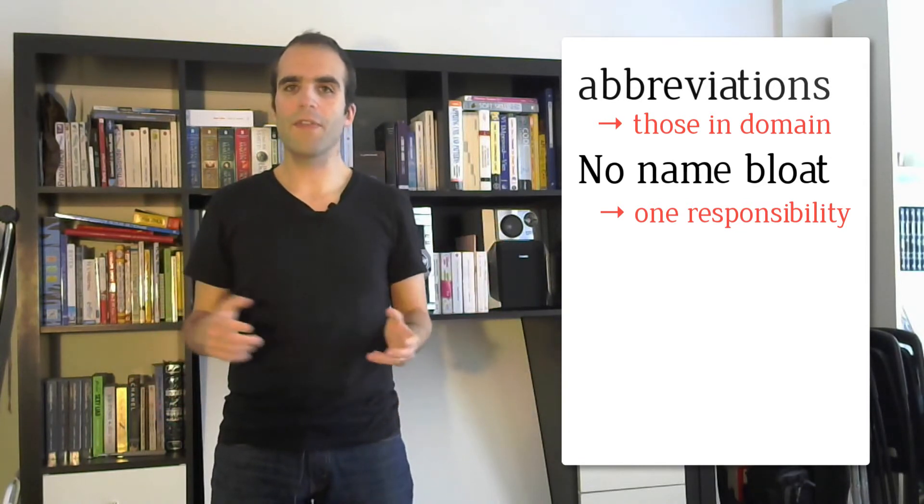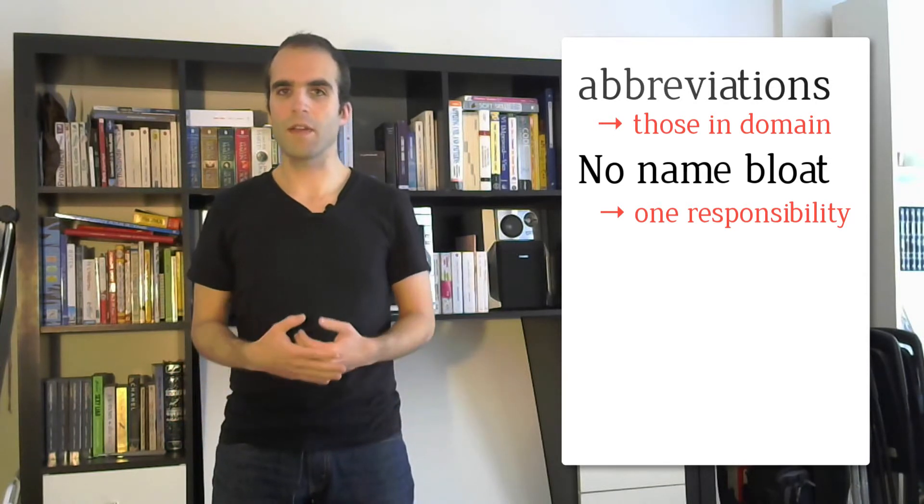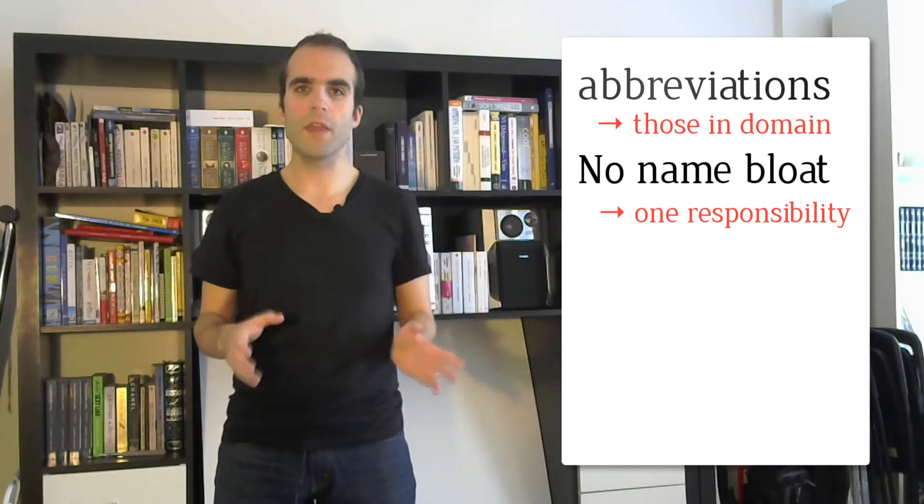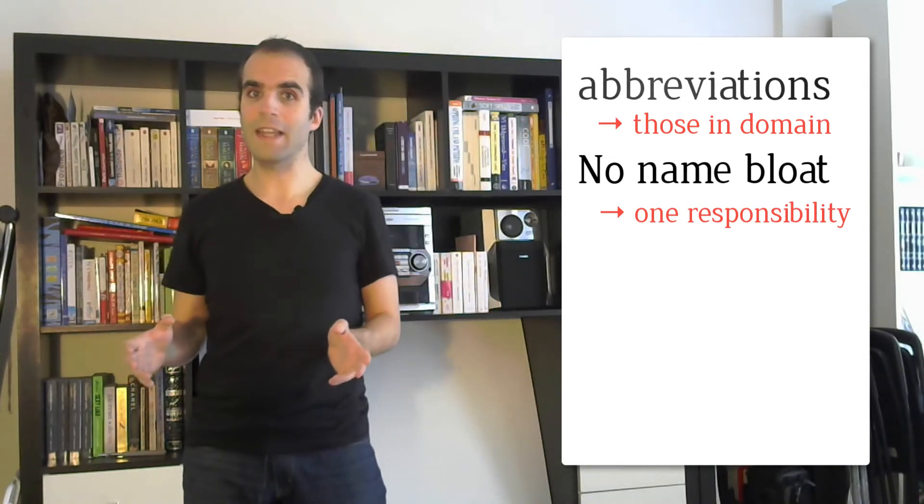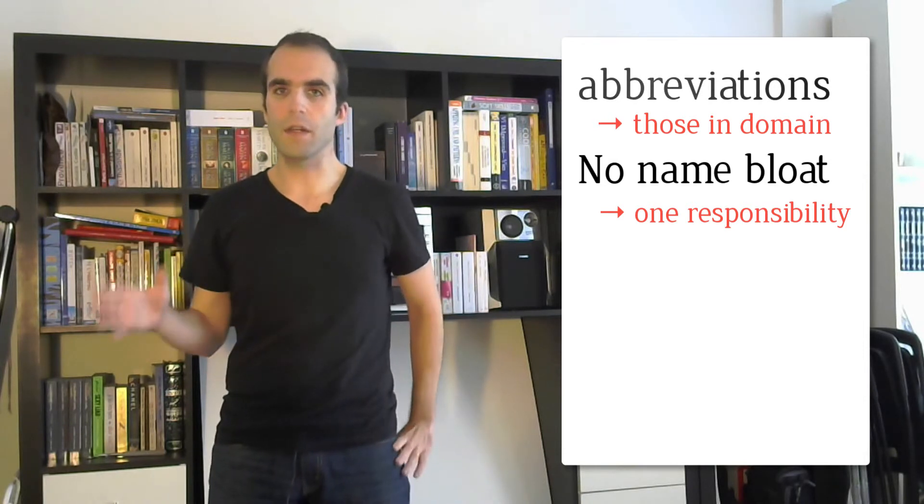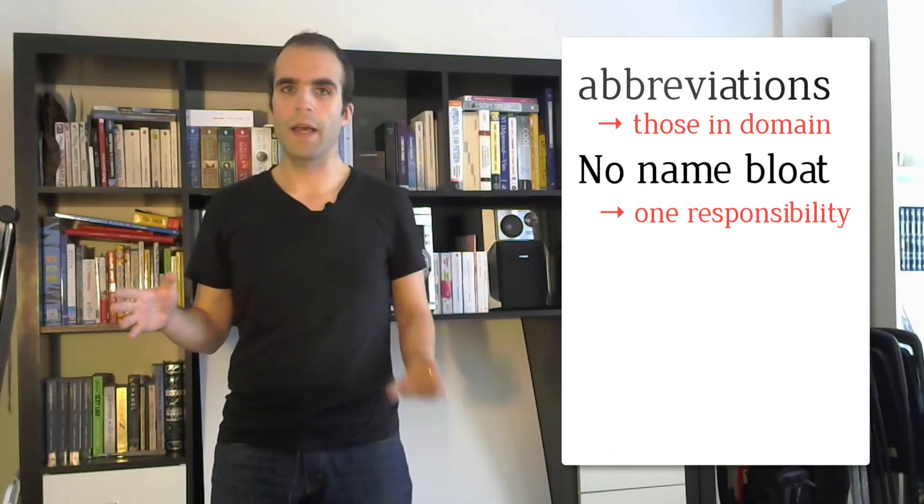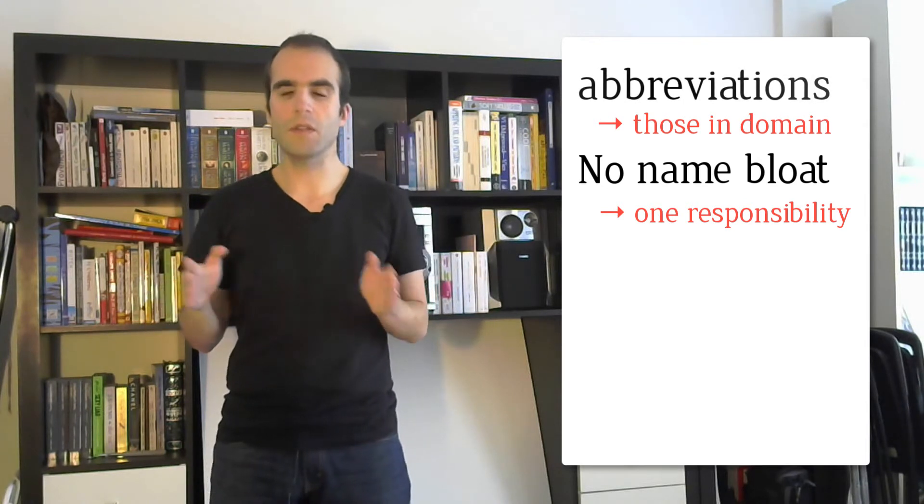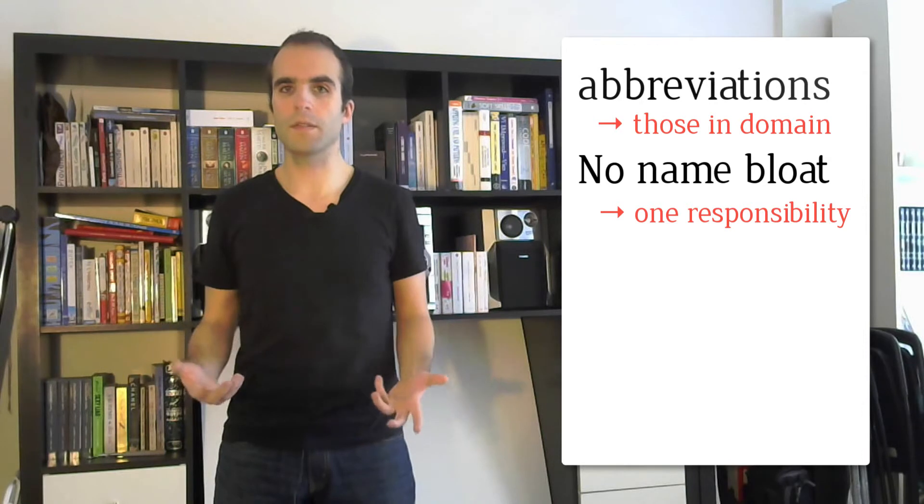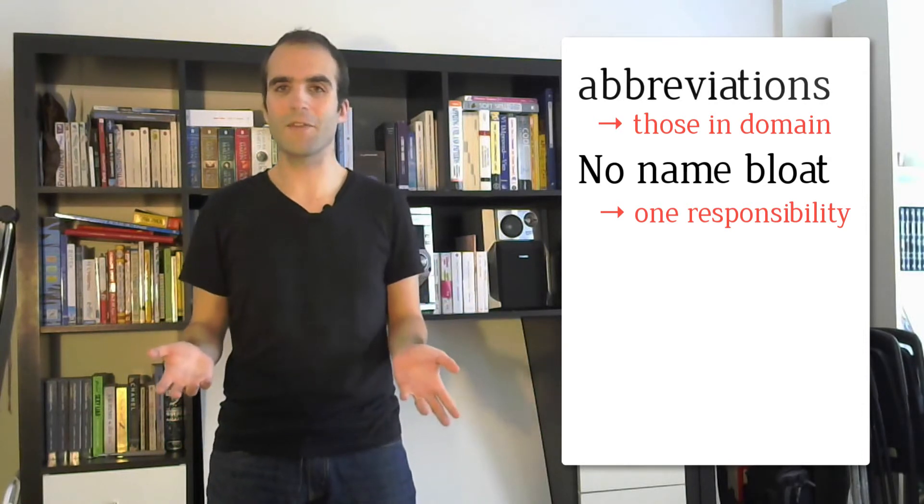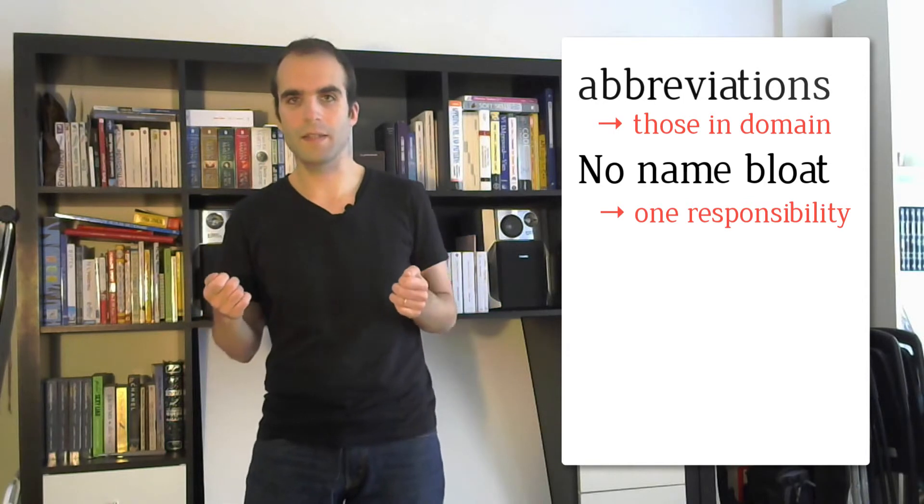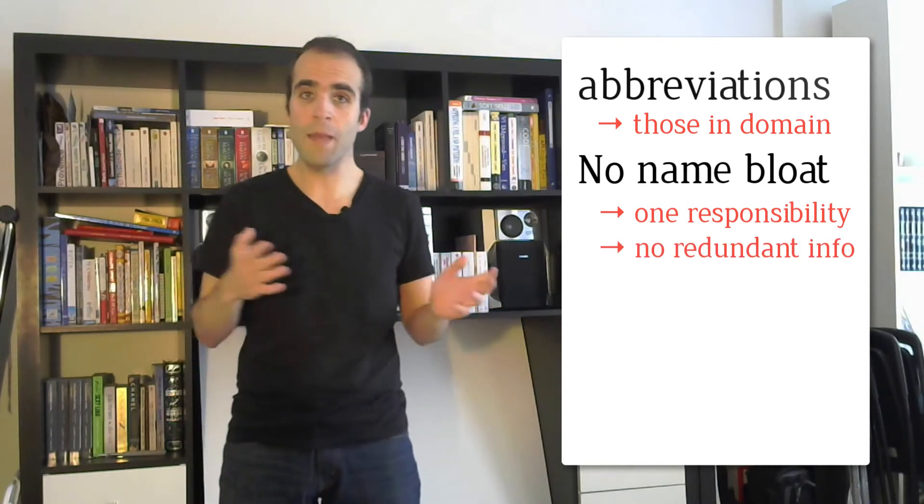Another thing that bloats the name of a function is when there's redundant information with the parameters it's taking. For example, every parameter has a type. Since parameters are already in the prototype of a function and in the arguments we're passing at a calling site, there's no need to repeat this type information in the name of the function.